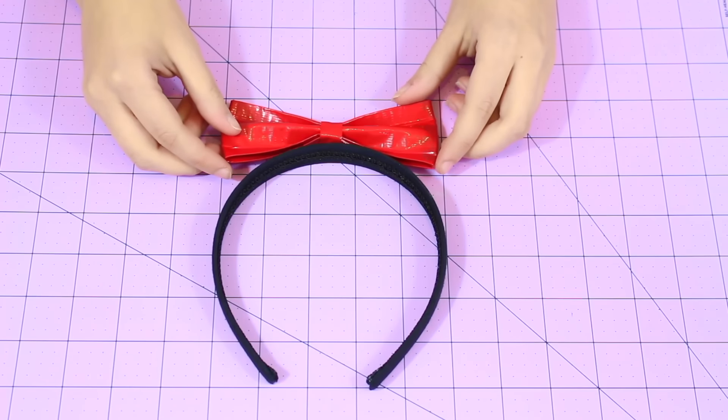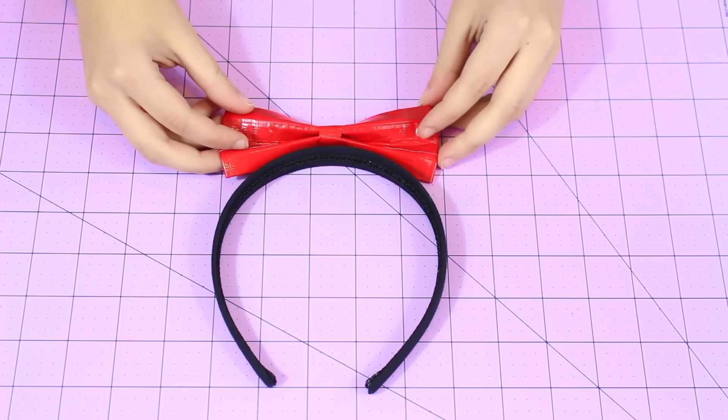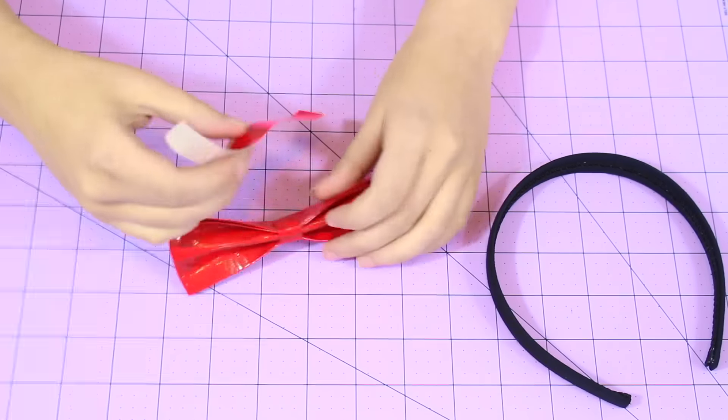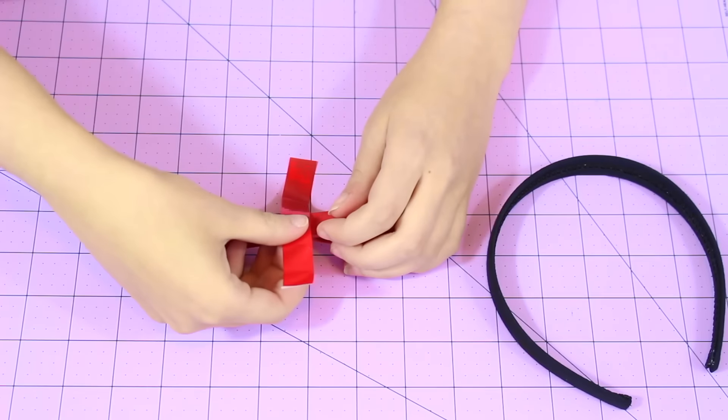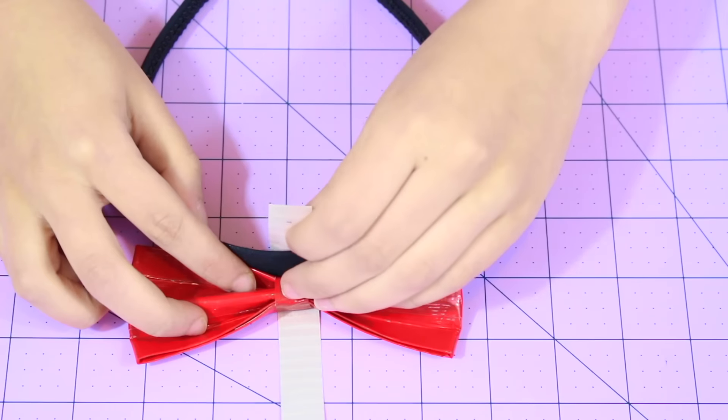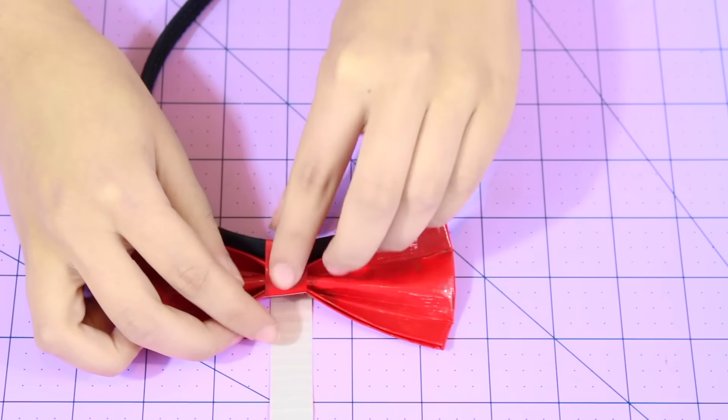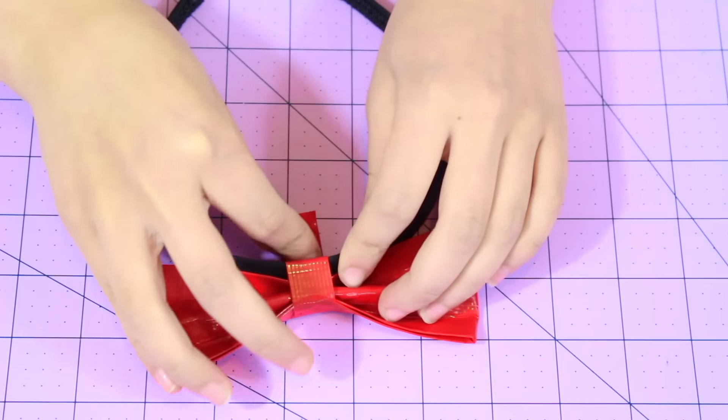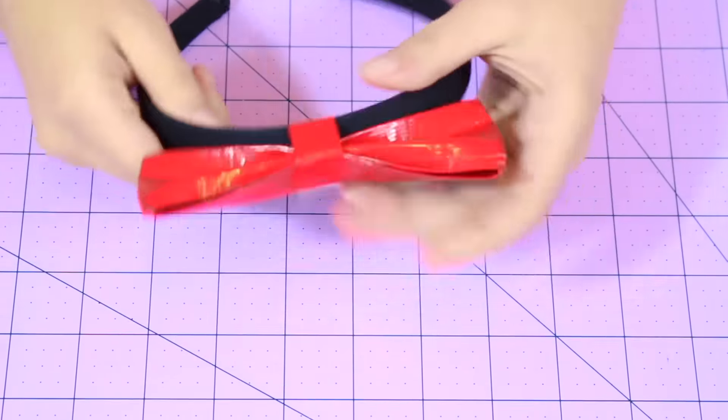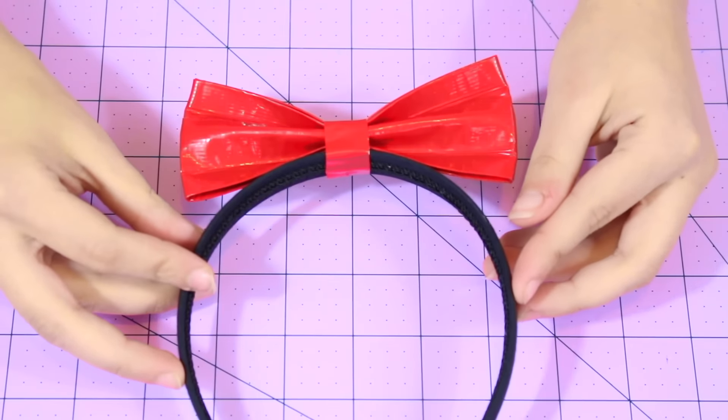And I'm just placing this in the middle so I can seal that bow together in the middle. And now I'm just taking my headband and seeing which side will look better. And I took another piece of our 5 inch tape and I'm going to place that right on the bow again. But this time we're folding it onto the headband as well. Which can be kind of tricky so just take your time. So now you should have your bow attached to the headband. And now all we have to do is attach the Minnie ears.